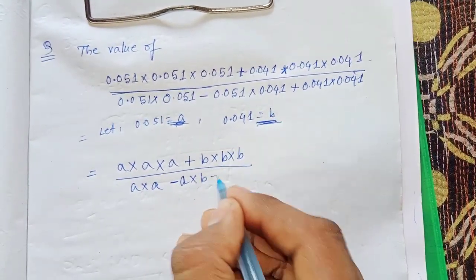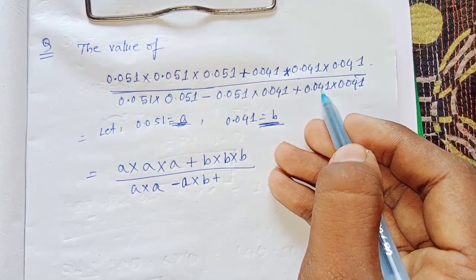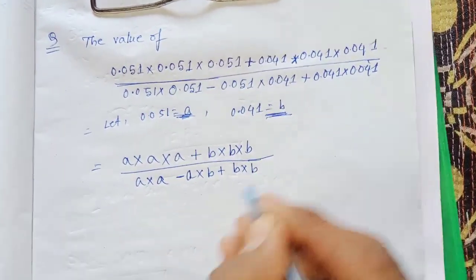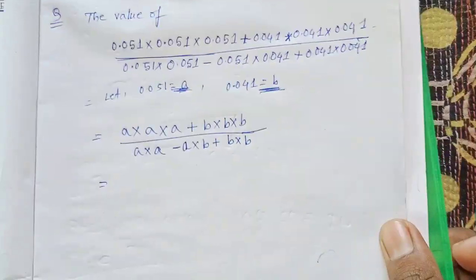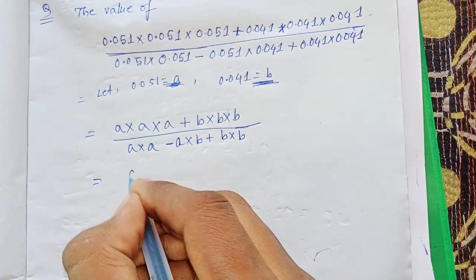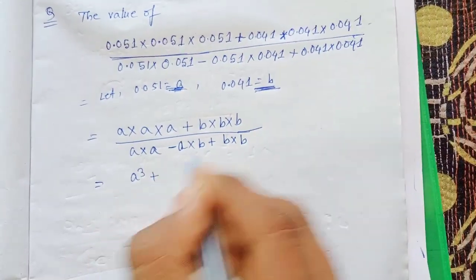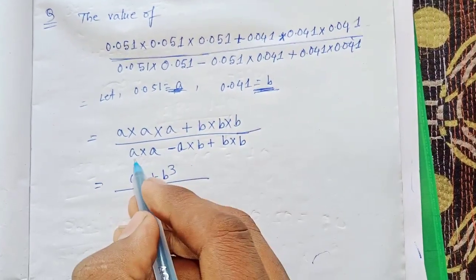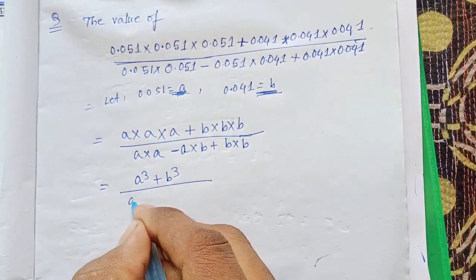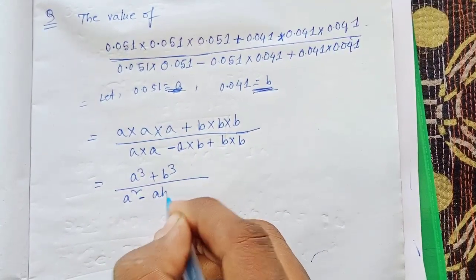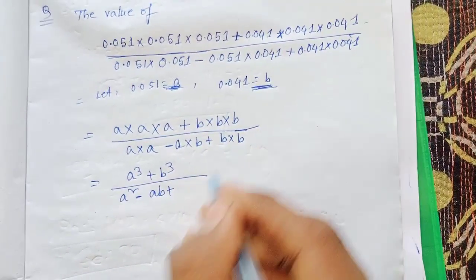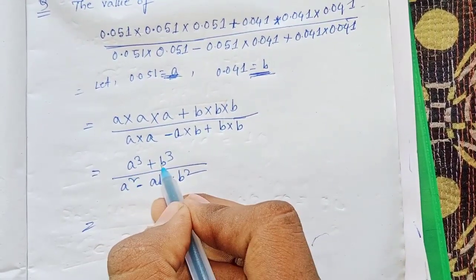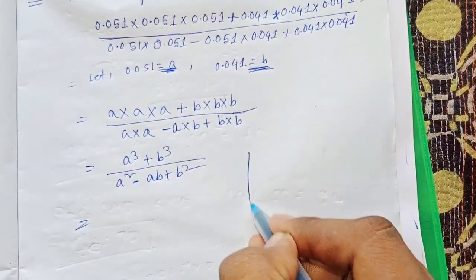Simplifying: a × a × a is a³, and b × b × b is b³. The denominator becomes a² minus ab plus b². So we have a³ + b³ divided by a² − ab + b².